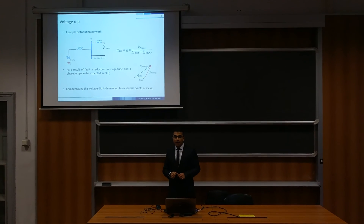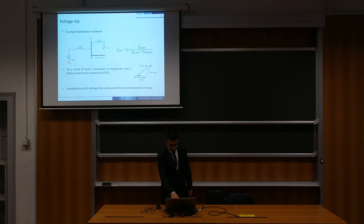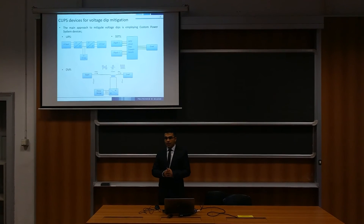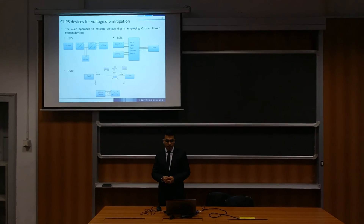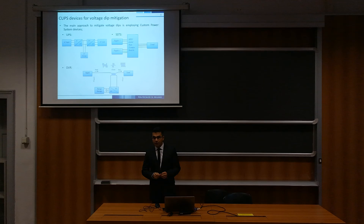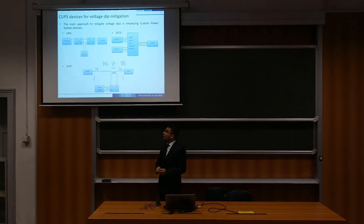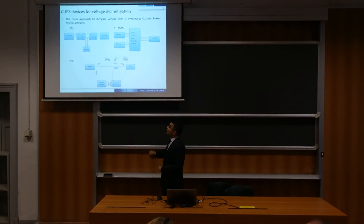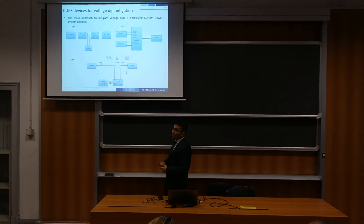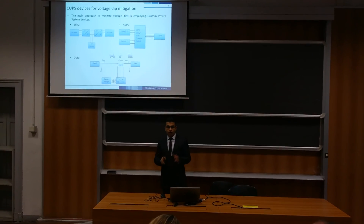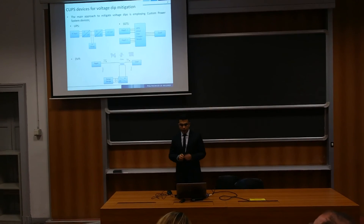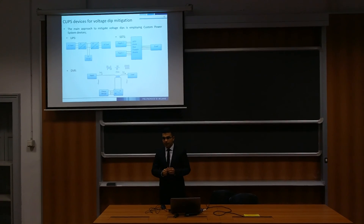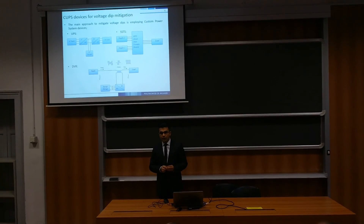Compensating this voltage dip is demanded from several points of view. The main approach in order to mitigate voltage dip is employing a custom power system device. This device could be an interruptible power supply, a solid-state transfer switch, or a dynamic voltage restorer — DVR — which is the case of our discussion. DVR is a series-connected device that is used in...